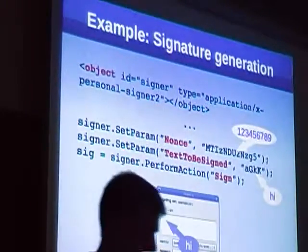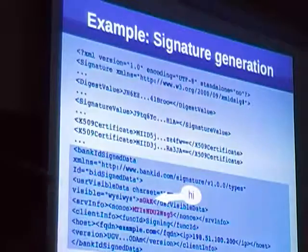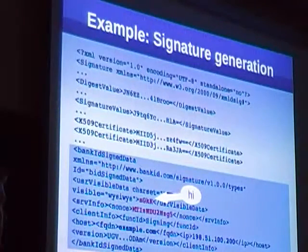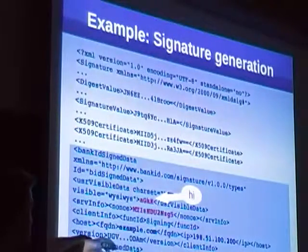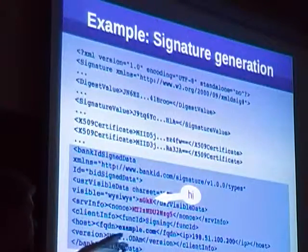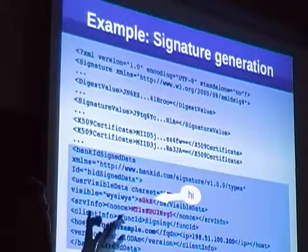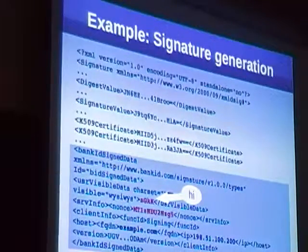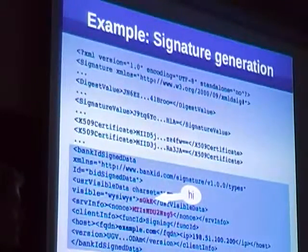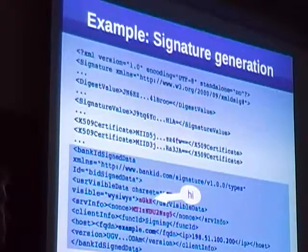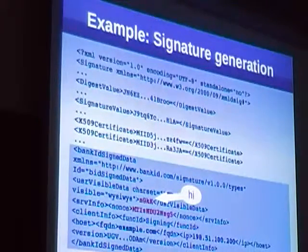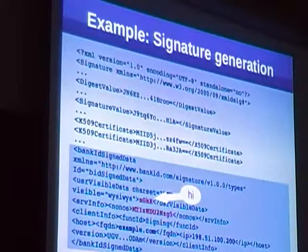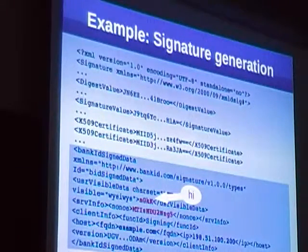When this is done, you get an XML signature. You can see how the data flows through. There is also some extra information about the domain name and IP address, which is probably there to help prevent phishing and similar attacks.